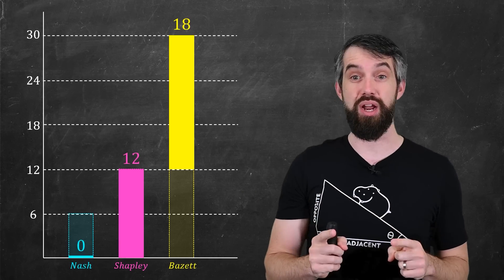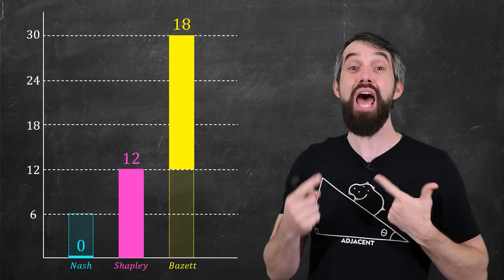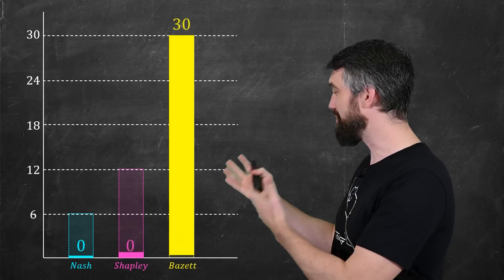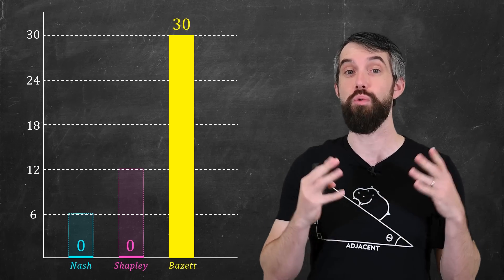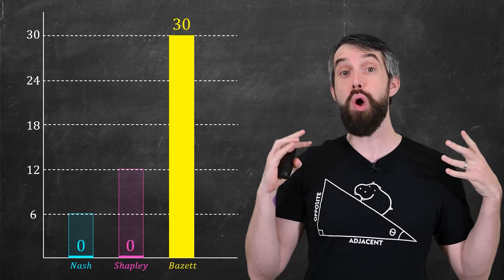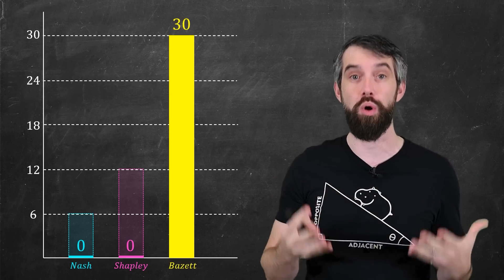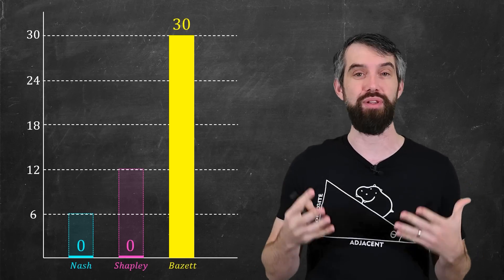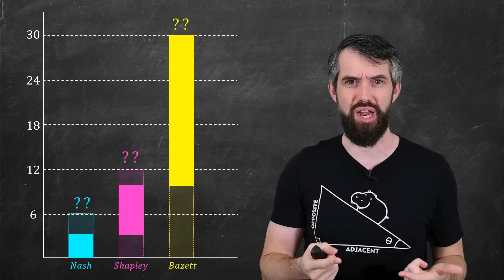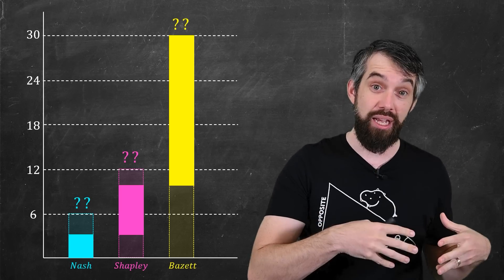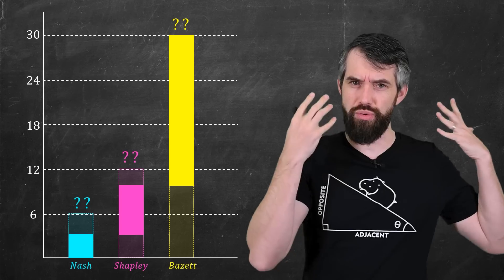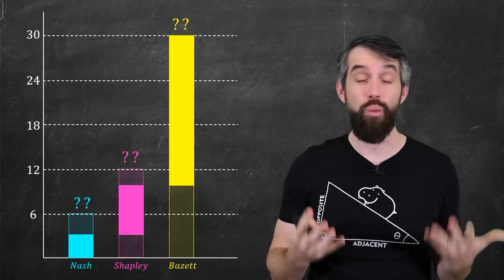In contrast, another extreme scenario is where Shapley pays their entire original amount of $12, and there's a ton of benefit going to Nash who pays none, and then that same $18 to me. The final extreme is the really bad one for me, where I pay the full $30 and the other two don't pay anything. This doesn't cost me anything different since I was going to pay $30 anyway if I went by myself, but I'm not sharing in the benefits of forming this coalition. So the actual best way is somewhere in the middle, where each person is paying less than they would have paid otherwise.